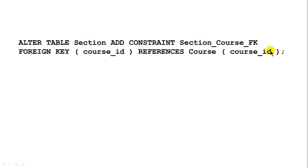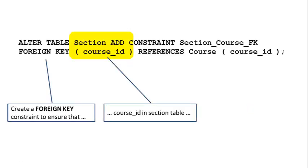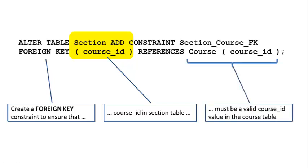The value must exist in the course table to confirm the course really exists — then you can have a section of that course. That is exactly what you're expressing in this constraint, and this constraint was automatically generated by the system based on our cardinality values. The information contained is: the course ID in the section table must be a valid course ID value in the course table.